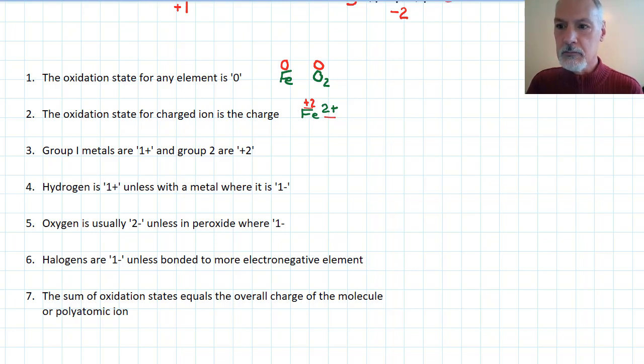Group one metals are all one plus. So that would mean that if we had something like lithium or sodium in our equation, combined with another substance, we would expect them to have a plus one charge. And anything in group two, for instance, say something like calcium or magnesium, we would expect those to have oxidation states when combined with other substances of plus two.